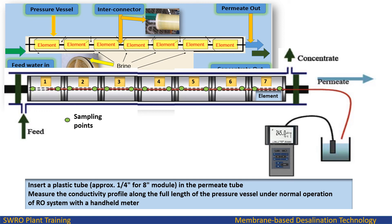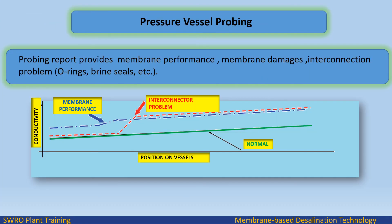Measure the conductivity profile along the full length of the pressure vessel under normal RO system operation using a hand-held meter. Samples are collected for each location as per the sampling point locations defined in the pressure vessel probing procedure.